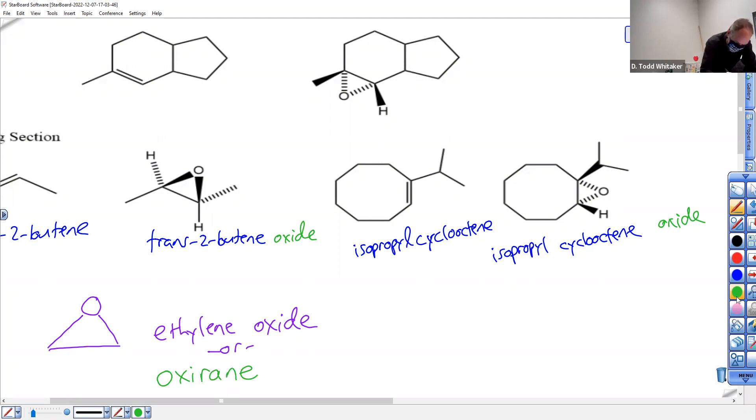And oxyrane is a heterocycle. What do you think heterocycle means? I'll tell you one that's not a heterocycle that's the same size. Cyclopropane is not a heterocycle. And ethylene oxide or oxyrane is a heterocycle. What does the prefix hetero always mean? Different things.